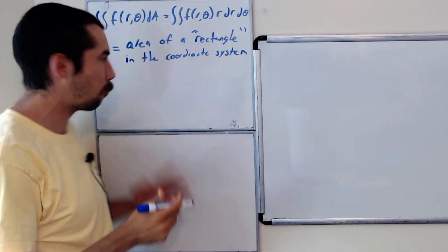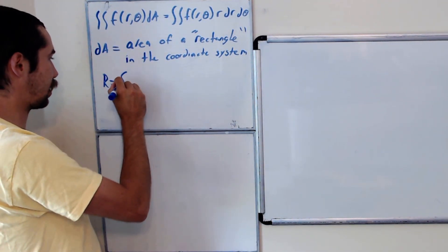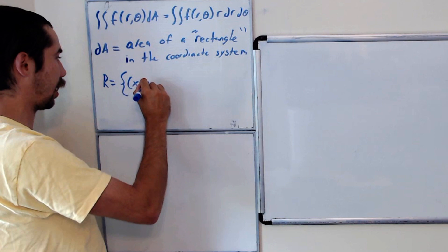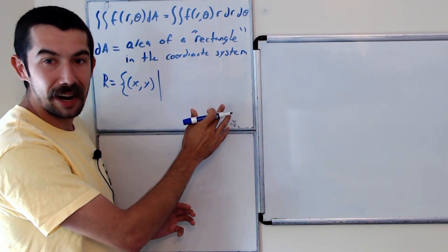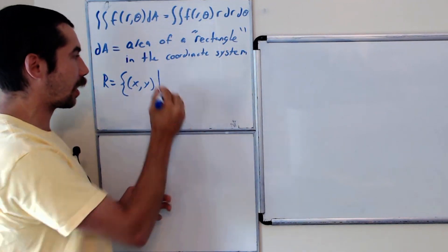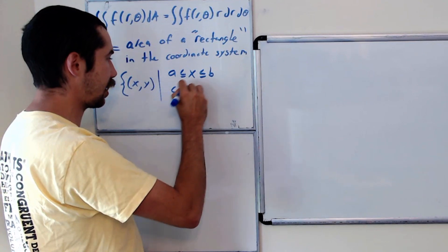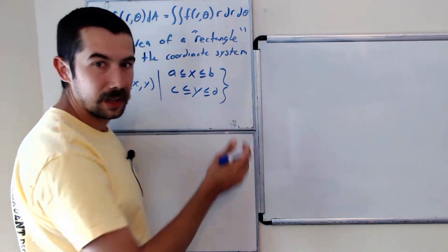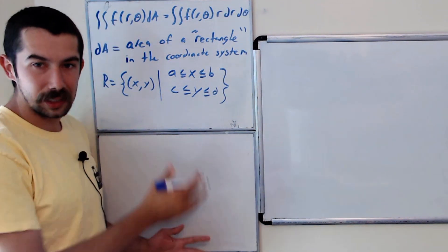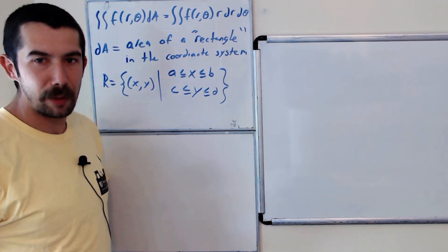So for example, we'll start with our basic Cartesian coordinates. What is a rectangle? A rectangle R is the set of points (x,y) such that there's constant bounds for both x and y. So we'll say maybe a is less than or equal to x less than or equal to b, and c is less than or equal to y less than or equal to d. And in the Cartesian coordinate system, that's going to look like a rectangle that you learned about in elementary school.